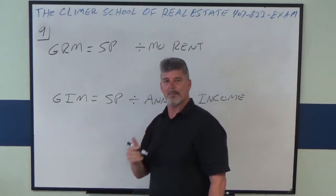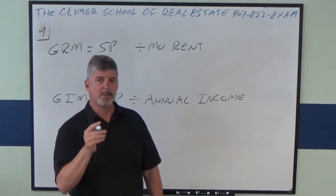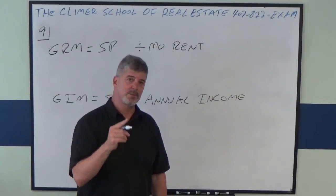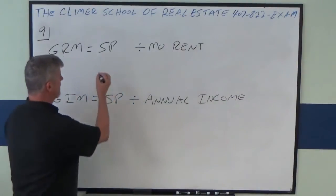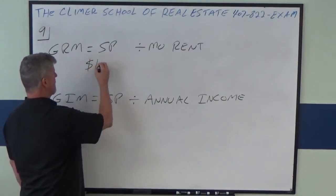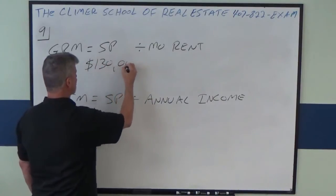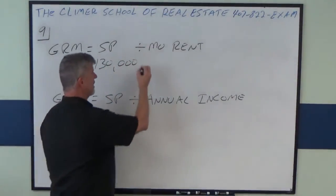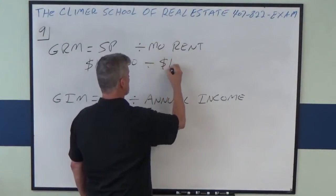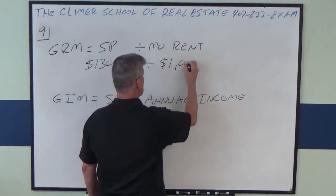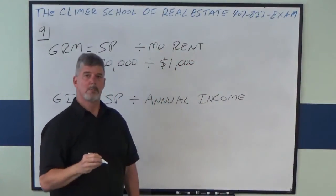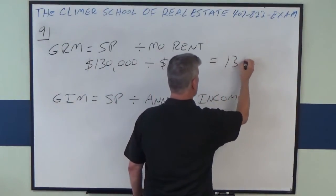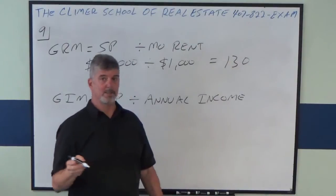You should be praying for one of these on your state exam, but let me show you what it looks like. Based on this problem, if they ask you for GRM, it would be $130,000 sales price divided by $1,000 monthly rent, which gives you a GRM of 130. That's all it is.